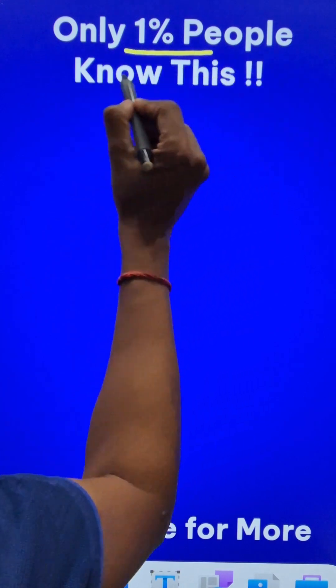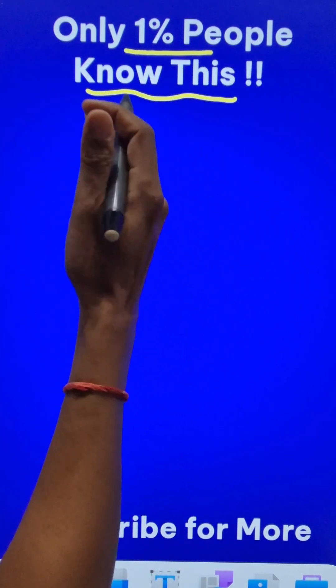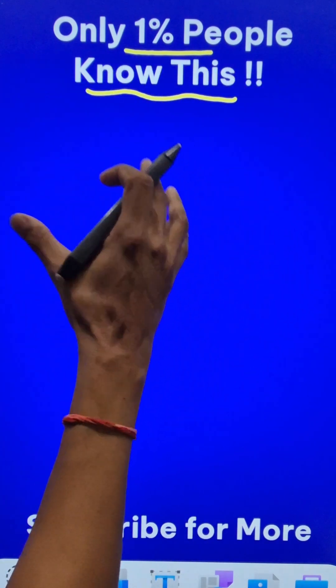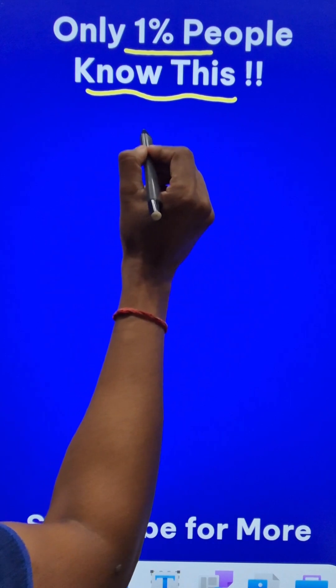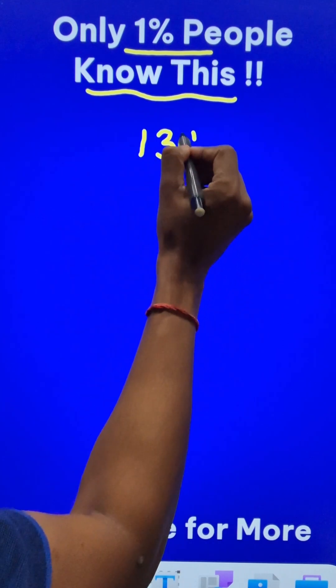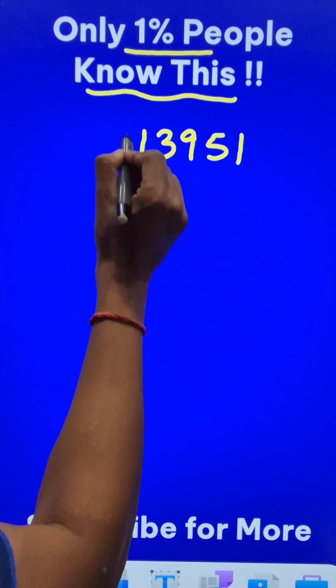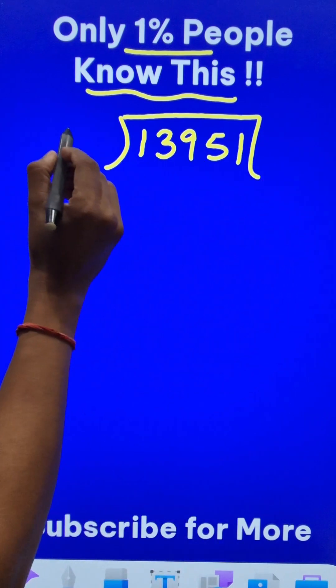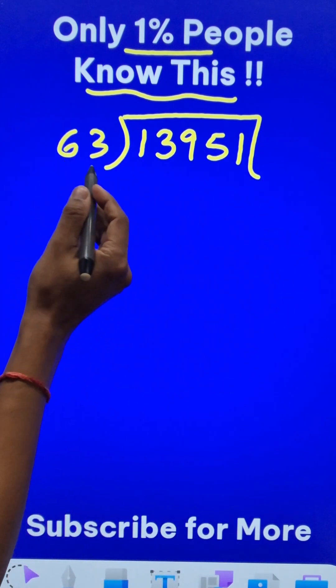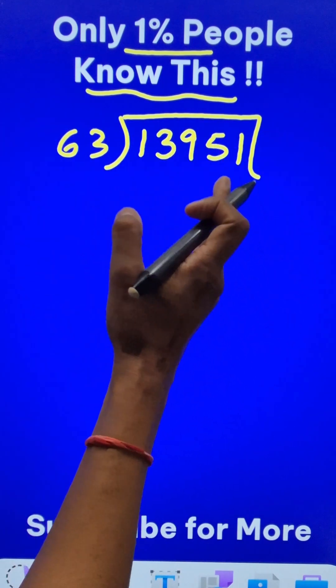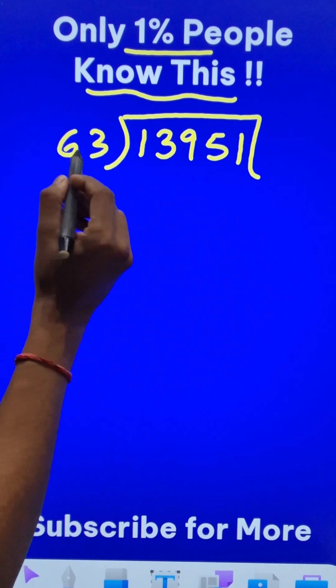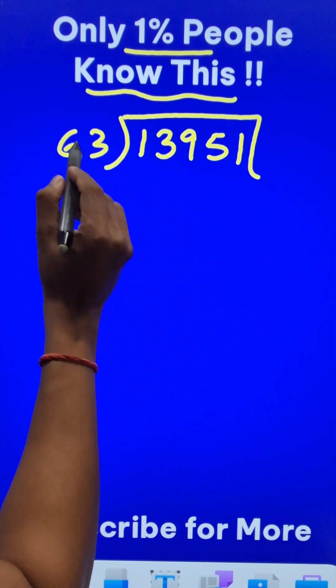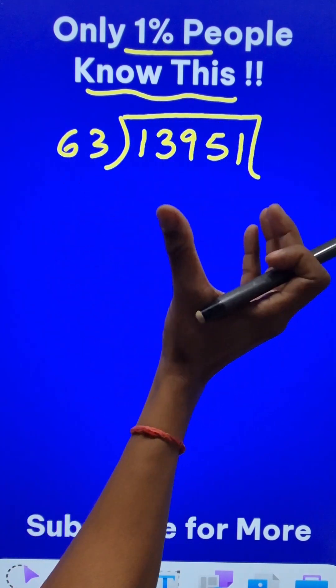Only 1% of people know this smart trick to divide numbers, especially when the divisor is a 2-digit number. Suppose you have the division problem where 13951, a big 5-digit number, is being divided by a 2-digit number like 63. Now nobody will know 63 times table and so the problem is difficult. But we can do it through partial quotients. We will not find the quotient directly, but we will find it partially.